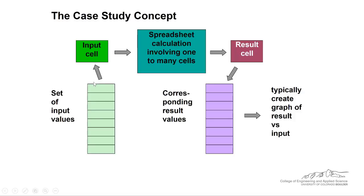What you'll have normally are some sort of values here in a column. These are your input values and you want to look at what effect do these input values have on the output. You have some sort of spreadsheet calculation involving one or many cells and the input cell goes into that calculation.